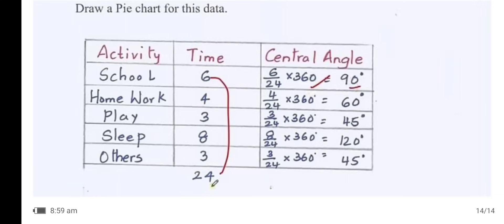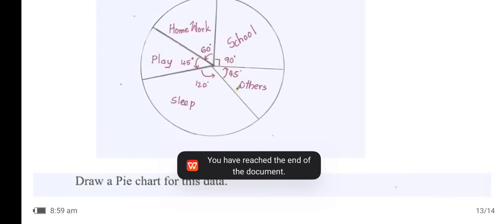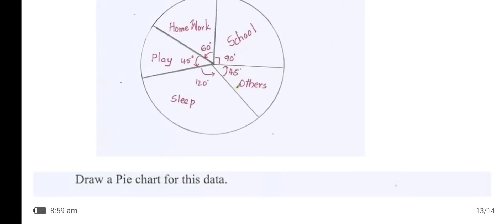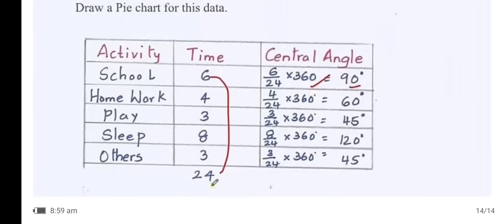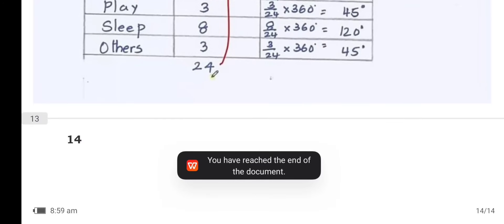School: 6/24 × 360° = 90°. Play: 3/24 × 360° = 45°. Sleep: 8/24 × 360° = 120°. Others: 3/24 × 360° = 45°. Write the correct angles and total them to check whether they sum to 360°. All the best, children.